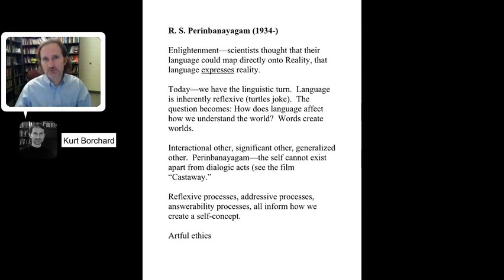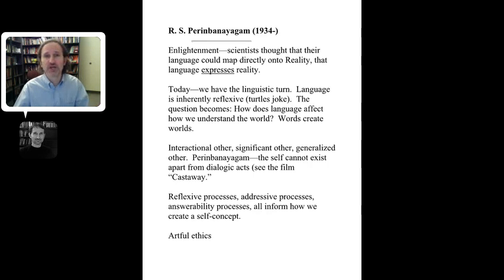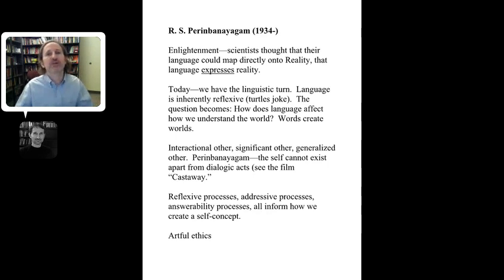The final theorist is R.S. Perinbanayagam, of Indian descent. Kenneth Allen made a choice to include him in this book about sociological theory — someone frankly the instructor hadn't heard of beforehand. Allen is a very inclusive thinker about what counts as sociological theory and who should be a sociological theorist. This is also a political act — it brings to mind Goffman's idea of framing: who gets counted within the frame and who's excluded.